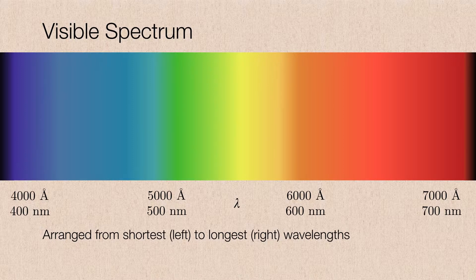So the visible spectrum in this case is arranged from the shortest wavelengths, which are positioned on the left of your screen, all the way to the longest wavelengths, which are positioned to the right of your screen.